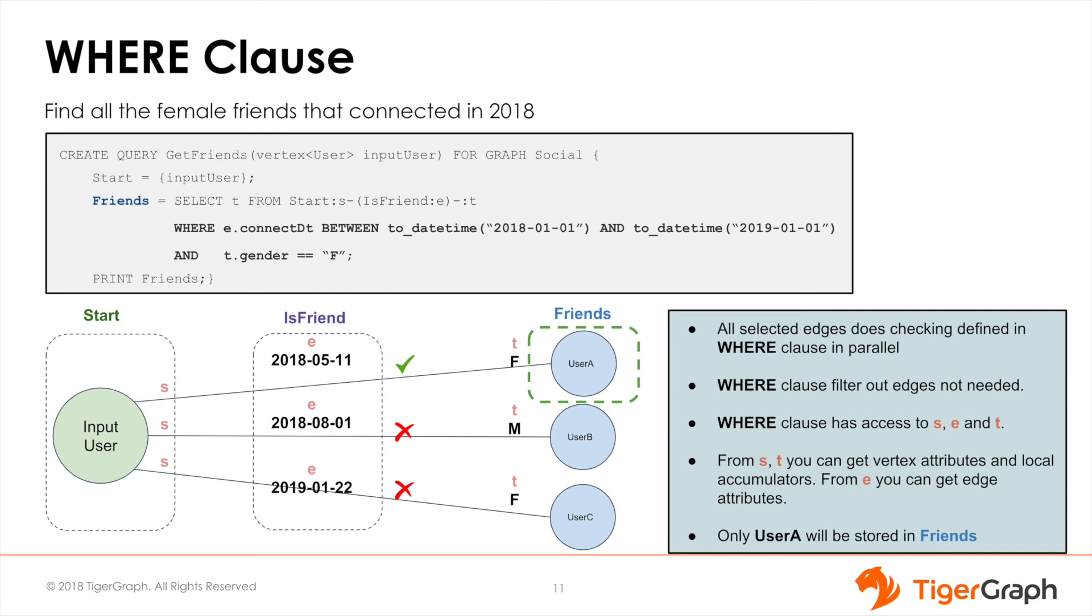The first condition it checks for is that the two friends were connected between a given time frame. The second condition checks that each target vertex gender attribute is female or F.